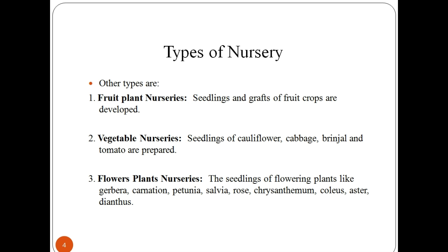Vegetable nurseries are a type in which seedlings of cauliflower, cabbage, brinjal, and tomatoes are prepared. In flower plant nurseries, the seedlings of flower plants like carnation, salvia, rose, coleus, aster, and dianthus are developed.